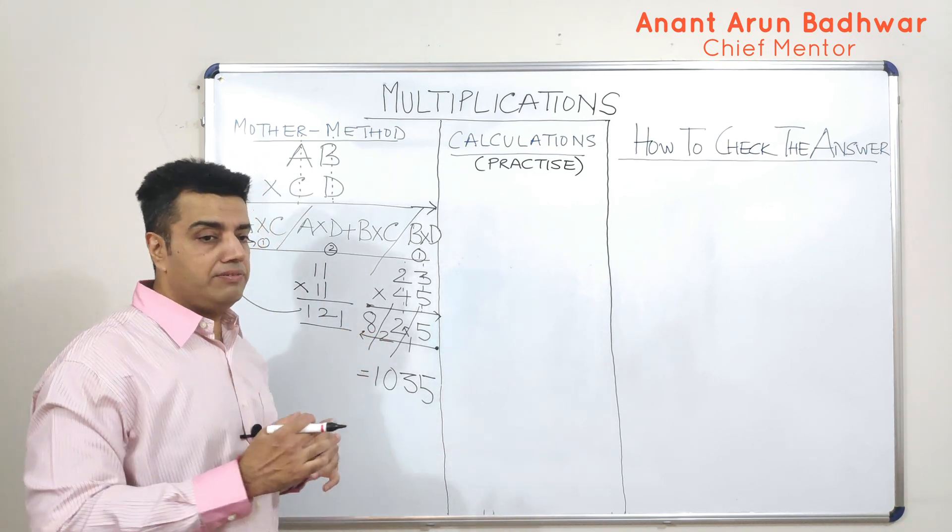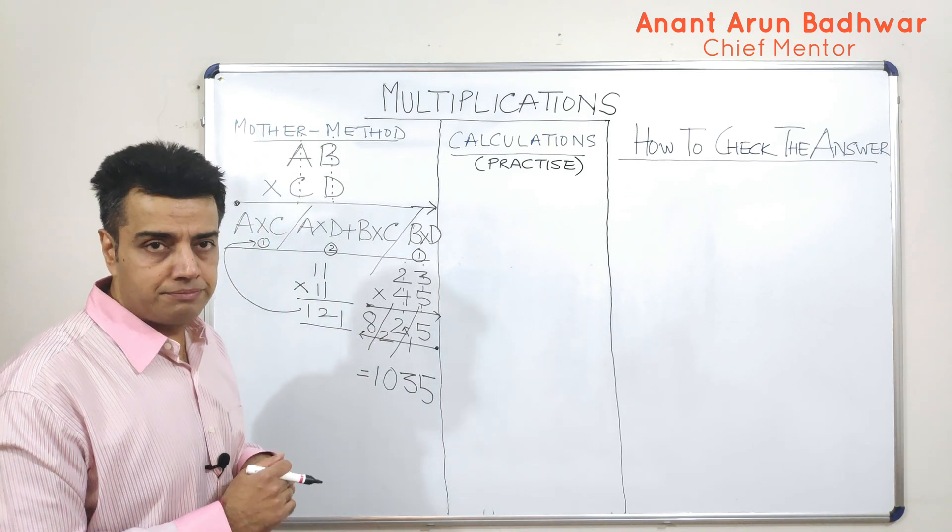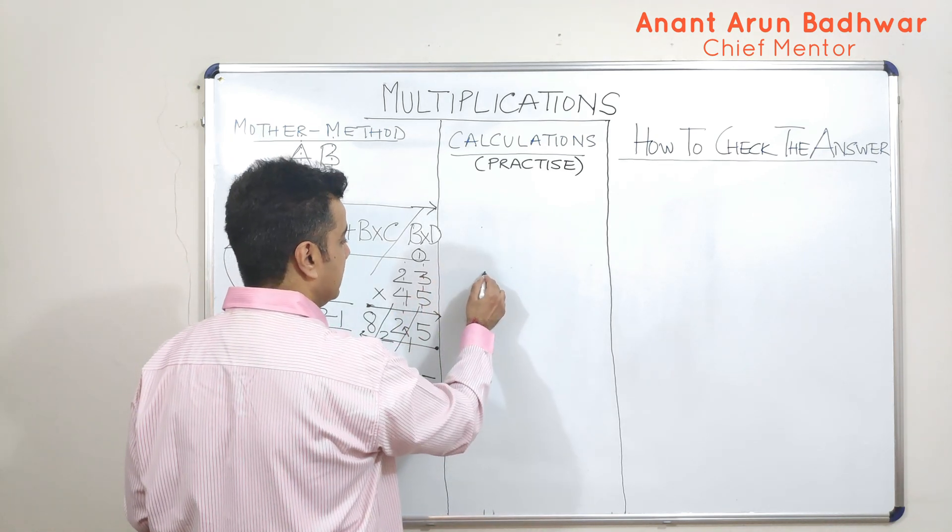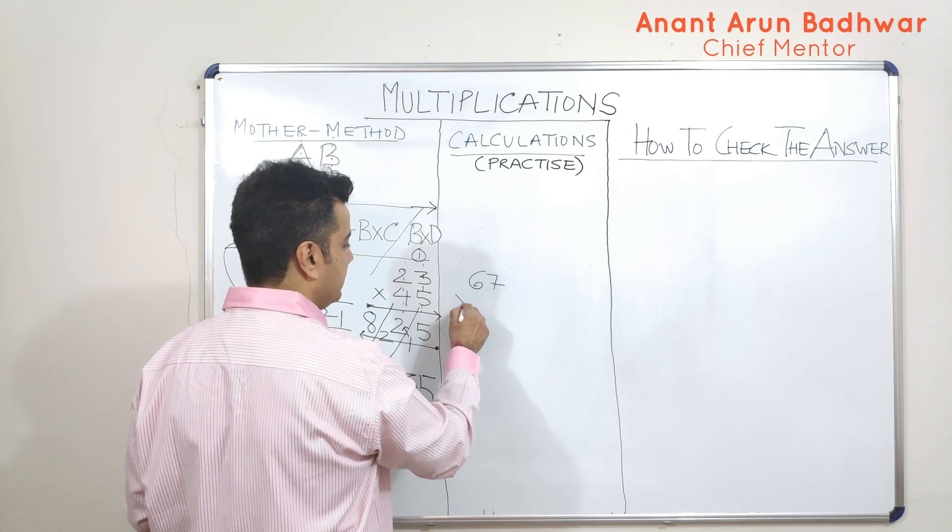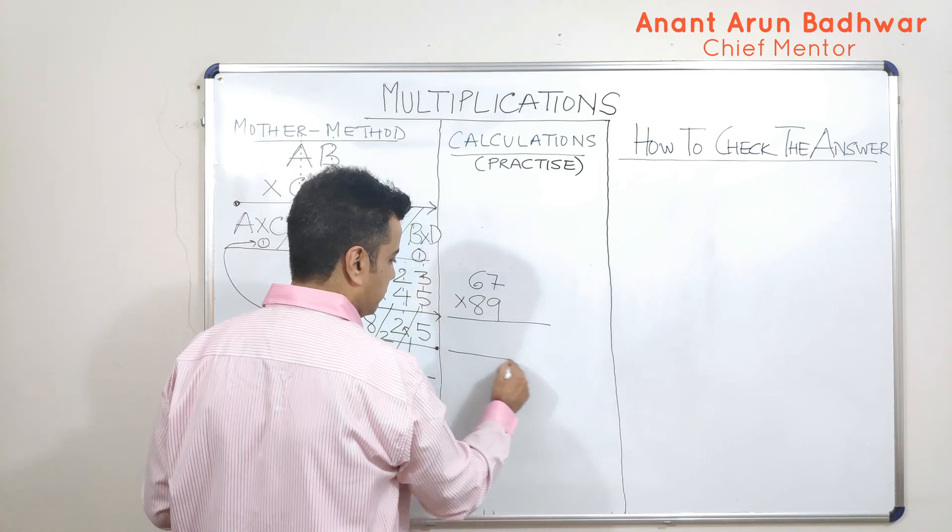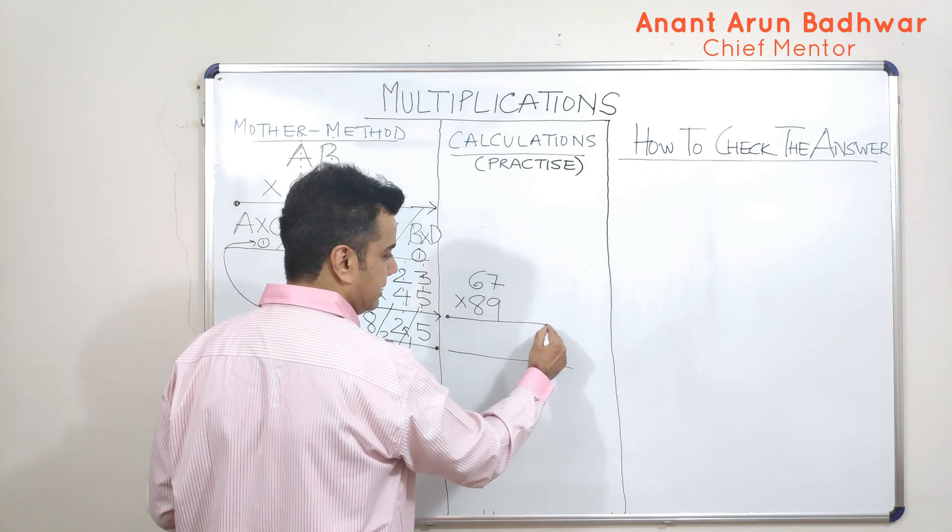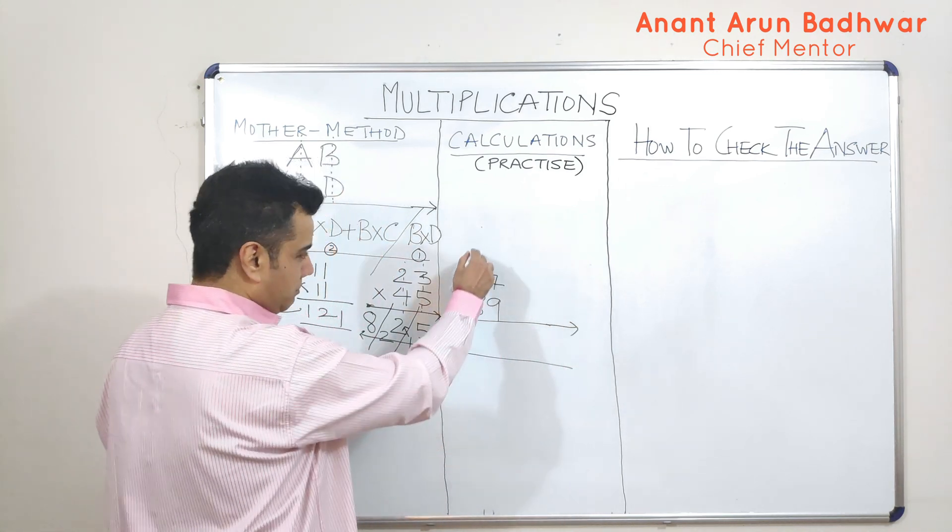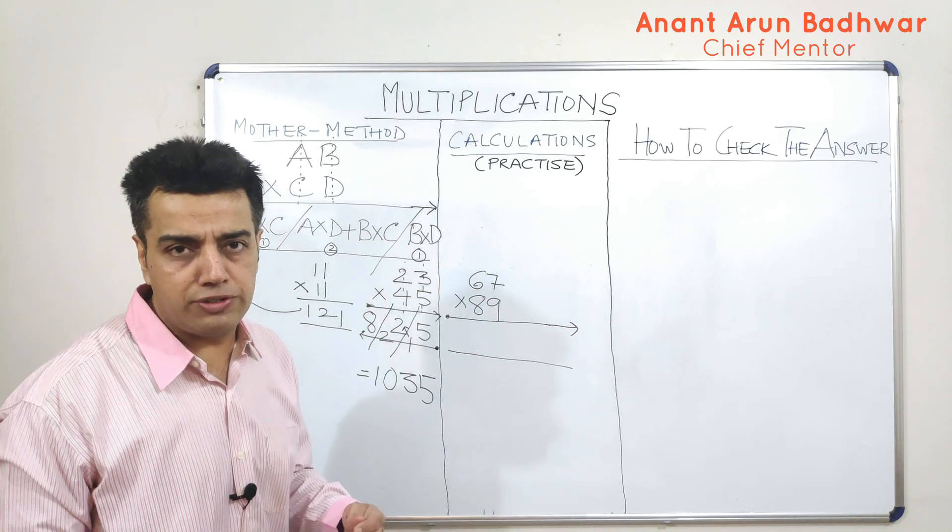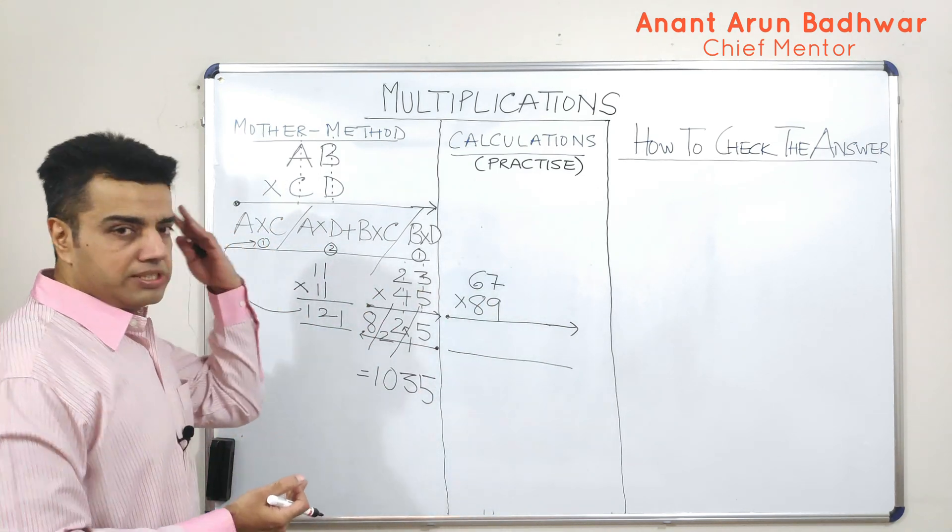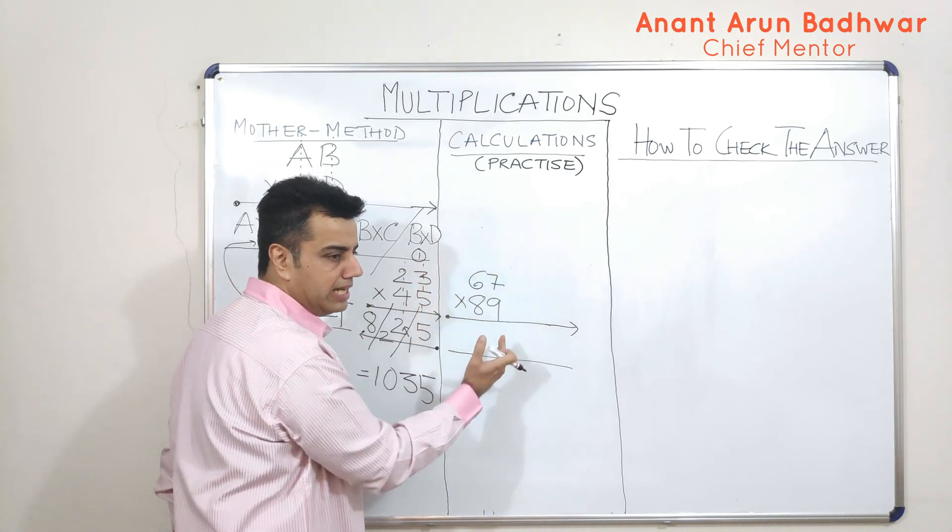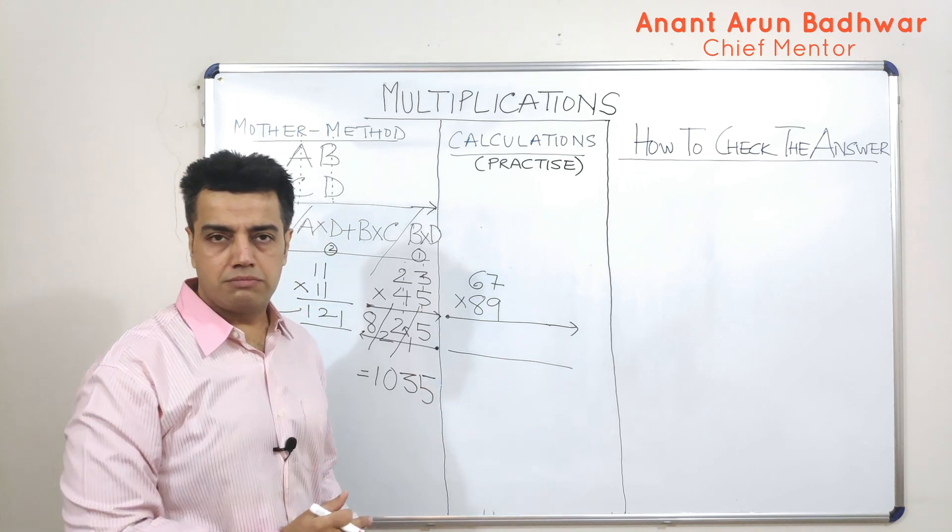Now, we will take relatively a bigger example. Let me take an example like, if I had to multiply 67 with 89. What am I supposed to do? I am supposed to move from the left hand side to the right hand side. Now, don't waste your time in drawing 2 columns, because that was just a way to explain it to you. So, just for the sake of revision, first I will take only 1 column, then I will take both the columns, and finally I am left with only 1 column.